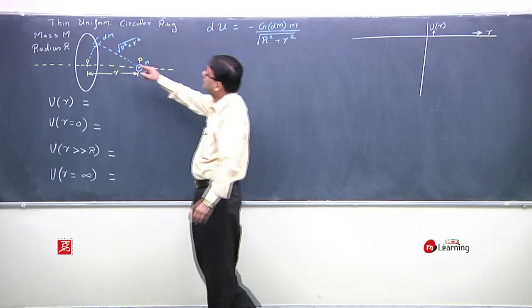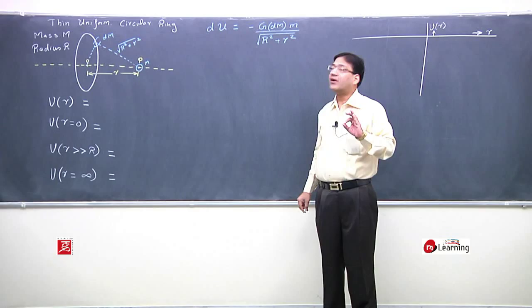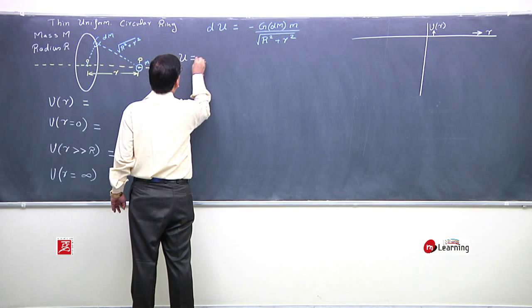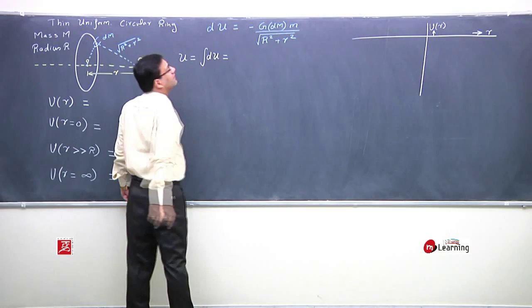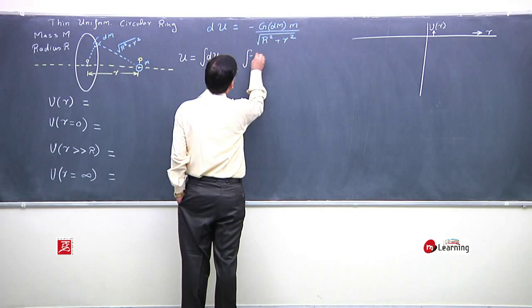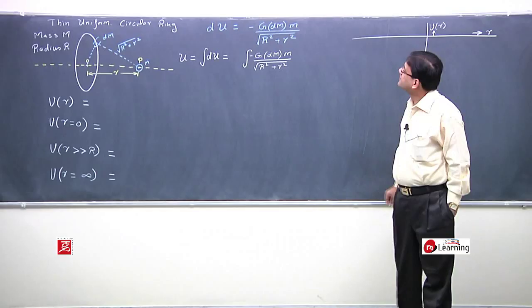This is differential potential energy of the mass system. Potential energy is a scalar quantity. In order to get the total potential energy it must be scalarly added, means it should be integrated. Integral of minus G dm into m by under root of r square plus R square.